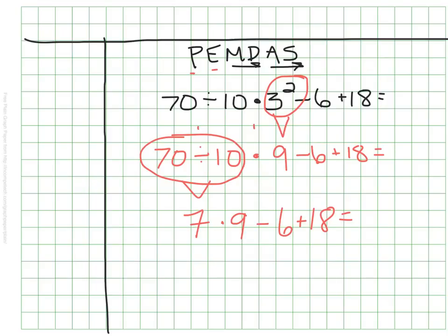From there, I will move to the M, so I'll circle that. I'll do the 9 times 7, or the 7 times 9.